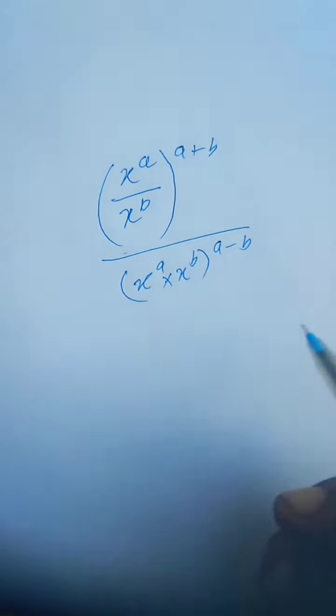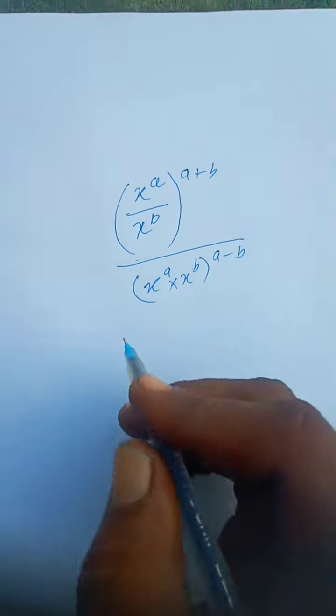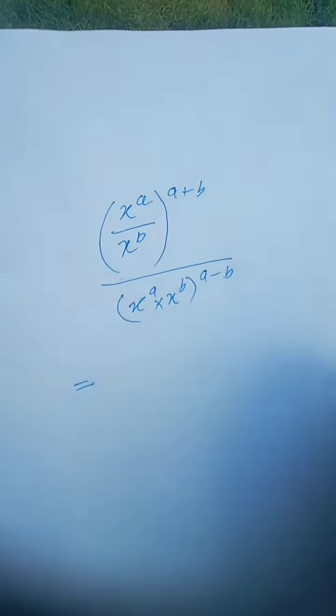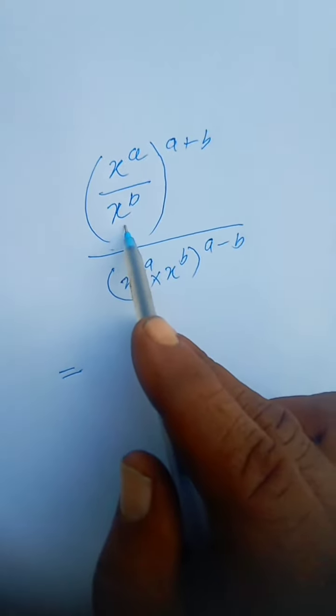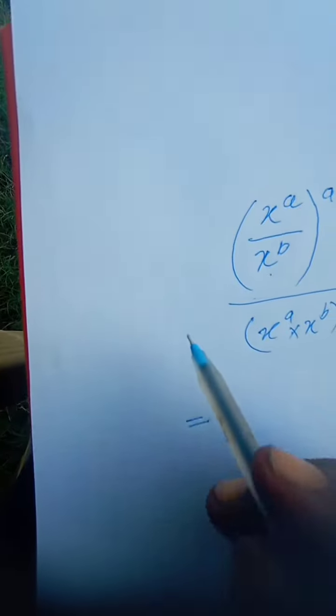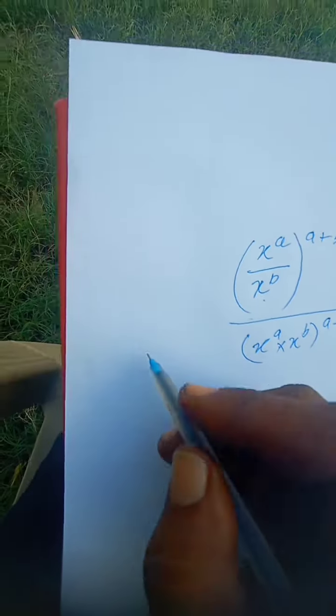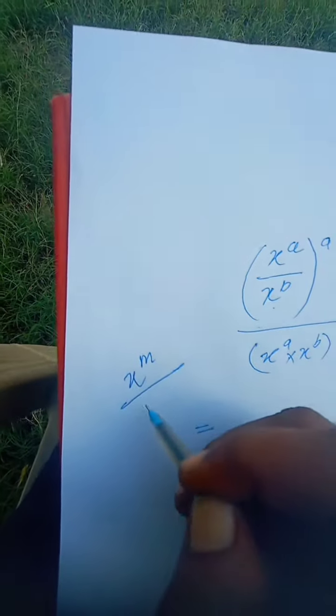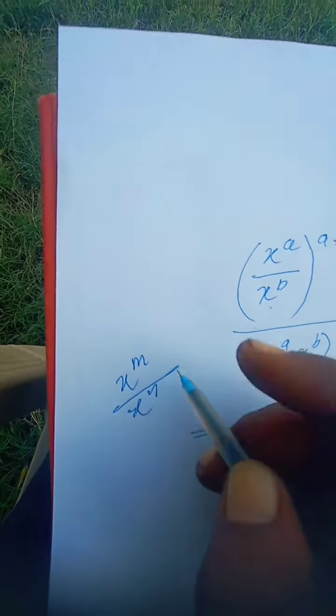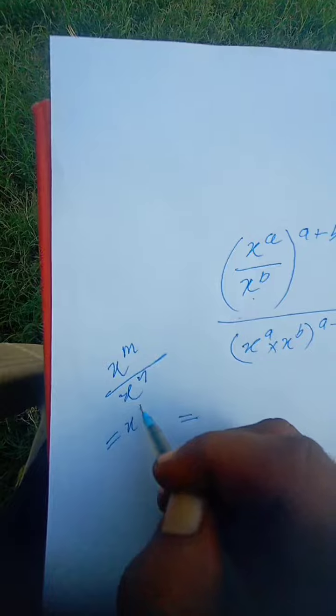First of all we dissolve the bracket. Here we are seeing x to the power a upon x to the power b. Then we follow the rule that x to the power m upon x to the power n is equal to x to the power m minus n.